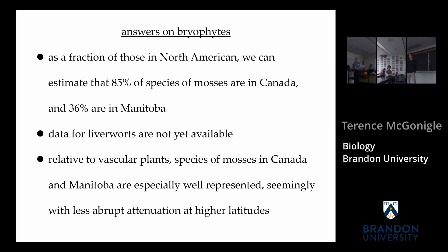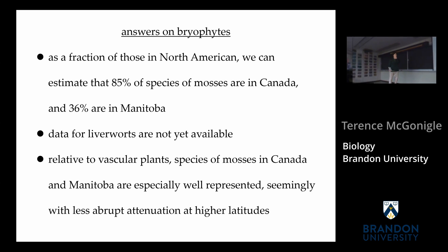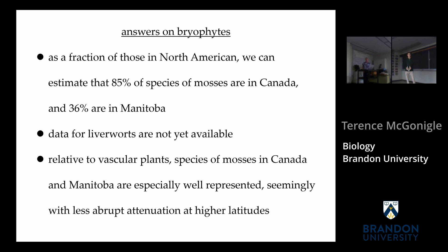Question: You mentioned we don't have much data on liverworts compared to mosses. Would you estimate that the proportion of liverworts in Canada would be higher relative to the rest of the world, similar to mosses? Answer: It may vary regionally. I think the representation of liverworts in British Columbia, with its rainforest environment, could be pronounced. But I'm not sure it'll hold up the same way across the north — habitat availability for mosses at higher latitudes is more about wetlands at ground level, whereas liverworts tend to be on tree trunks. It may not work out the same way, and we'll have to wait and see.